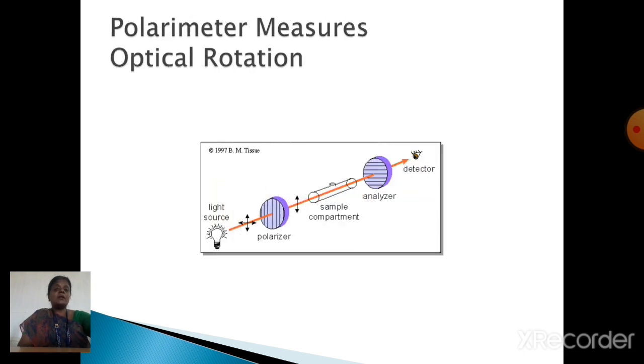Next, the polarimeter is used to measure how much angle of rotation has happened. For that the polarimeter contains an analyzer and detector.